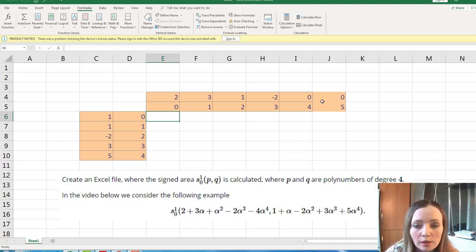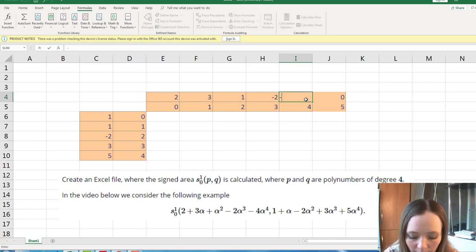In the first line we enter the coefficients of the first polynomial. This is 2, 3, 1, minus 2, minus 4. Sorry, we don't need this part here.